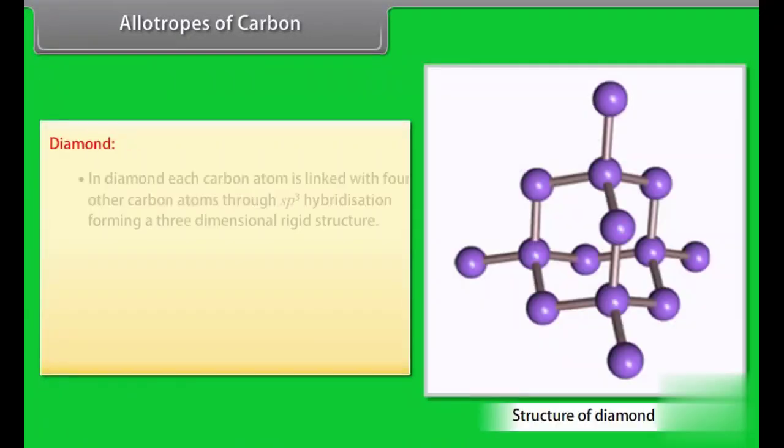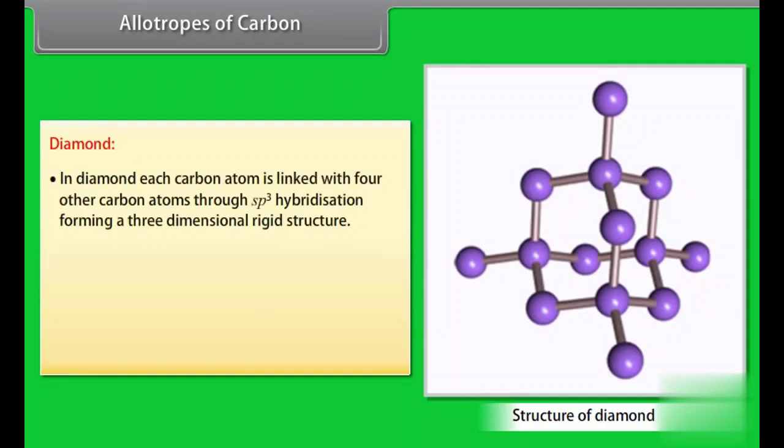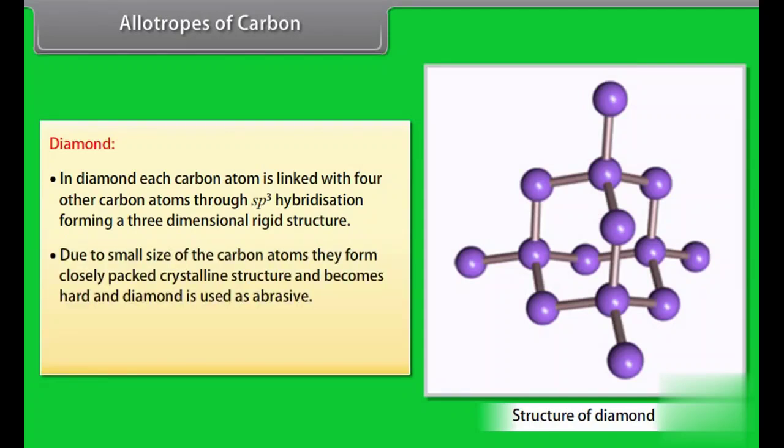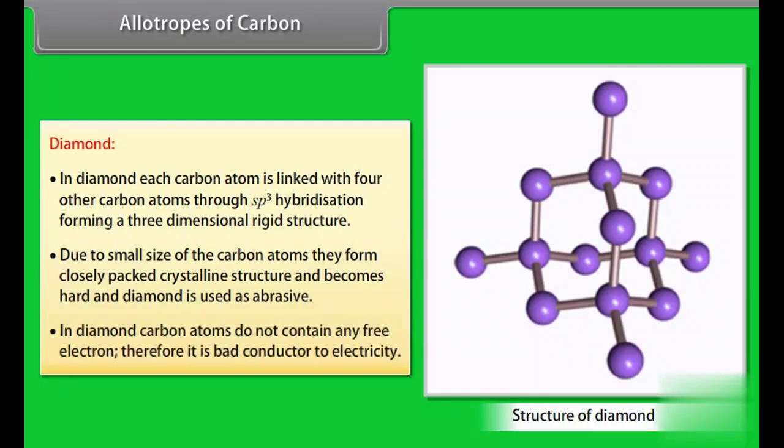Diamond. In diamond, each carbon atom is linked with four other carbon atoms through sp3 hybridization forming three-dimensional rigid structure. Due to small size of the carbon atoms, they form closely packed crystalline structure and becomes hard and diamond is used as abrasive. In diamond, carbon atoms do not contain any free electron. Therefore, it is a bad conductor of electricity.